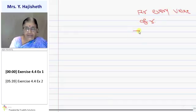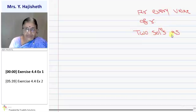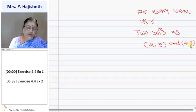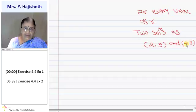I take two solutions: (2, 3) and (4, 3). Now take a coordinate plane, plot these two points, and join them.